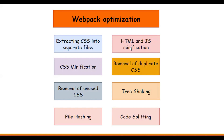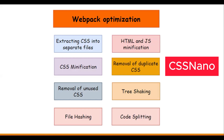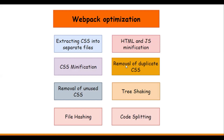Then we talked about development and production mode, and in production mode we saw how exactly the HTML and CSS are minified with the help of the Terser webpack plugin. Then we also saw how exactly we can minify our CSS, and for that we used the css-minimizer-webpack plugin. The same plugin is also used to remove duplicate CSS — internally it uses nano CSS and does a lot of CSS minification and optimization for us.